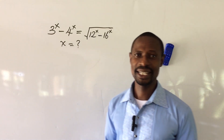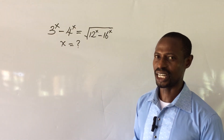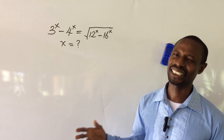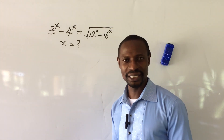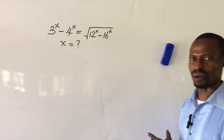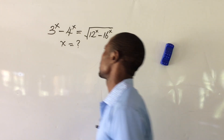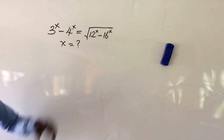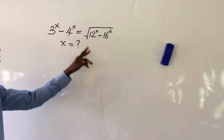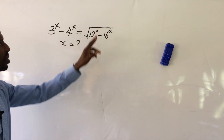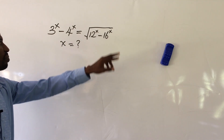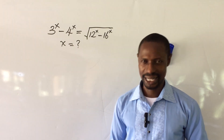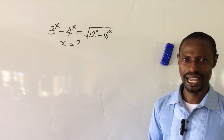Today we have a very nice exponential challenge. It's one of Olympiad Math's challenges: solving exponential equations with radicals. The question reads: we have 3 to the power of x minus 4 to the power of x equal to the square root of 12 to the power of x minus 16 to the power of x. What will be the possible value or values of x?